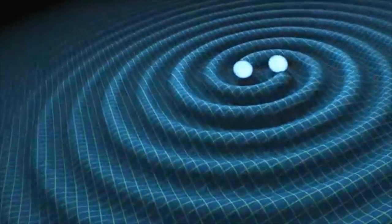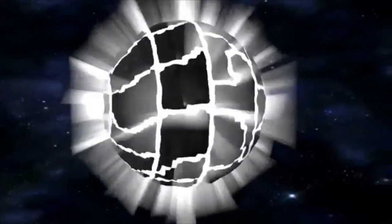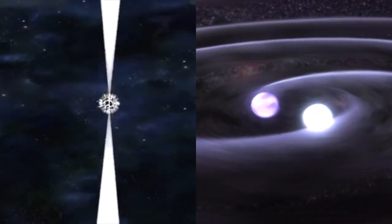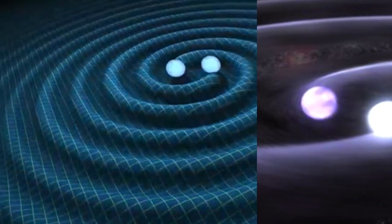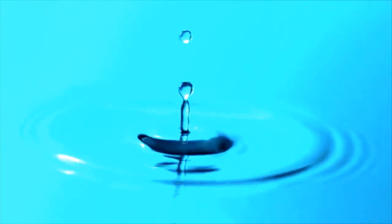Gravitational waves are ripples in space-time. They're caused by some of the most violent events in the universe. Massive accelerating objects such as neutron stars or black holes orbiting each other would disrupt space-time in such a way that waves would emit from the source, like waves from a stone thrown into a pond.